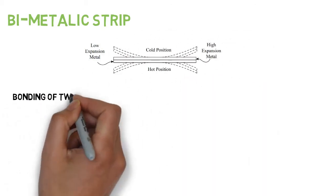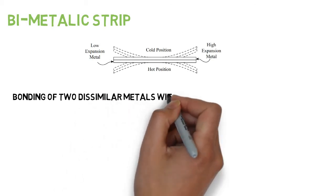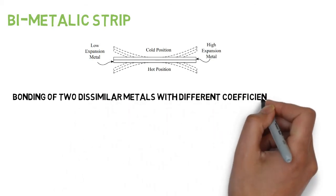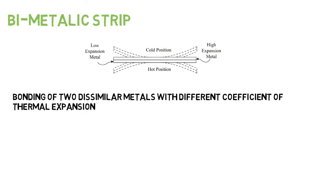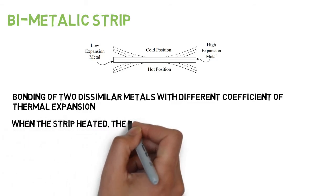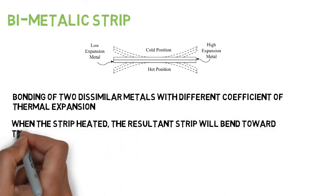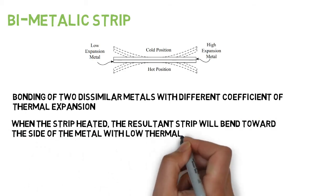Bonding two dissimilar metals with different coefficients of thermal expansion produces a bimetallic element. When the strip is heated, the resultant strip will bend toward the side of the metal with low thermal expansion rate.